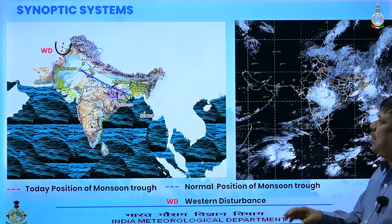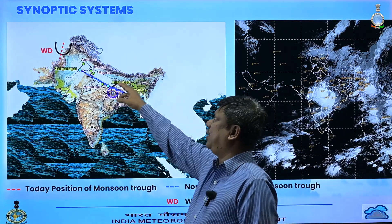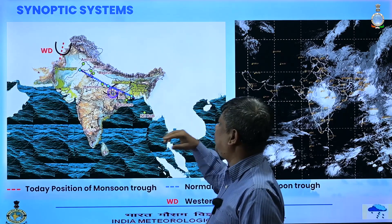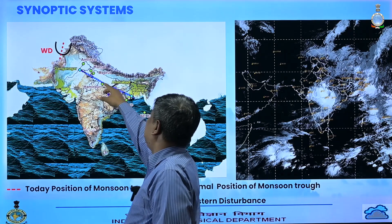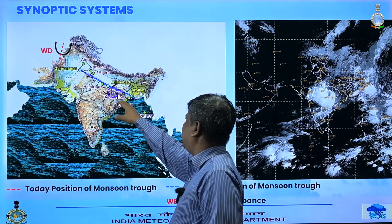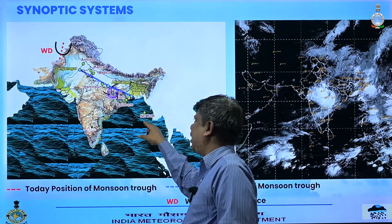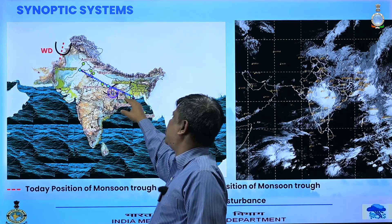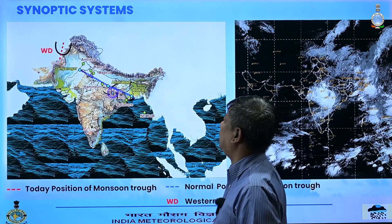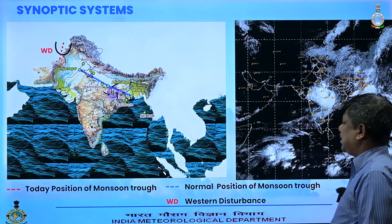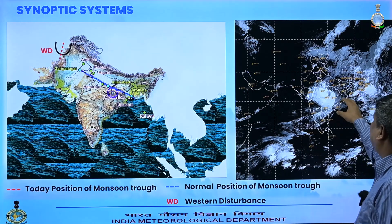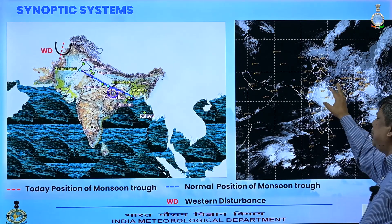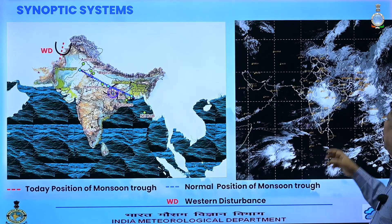Today's synoptic situation shows the western disturbance is still present. The monsoon trough extends from Amritsar-Karnal-Meerut-Lucknow through the depression center up to northeast Bay of Bengal, and it is close to or south of the normal position. Today's satellite imagery shows a lot of cloud cover over Madhya Pradesh due to the system, which is causing heavy rain.